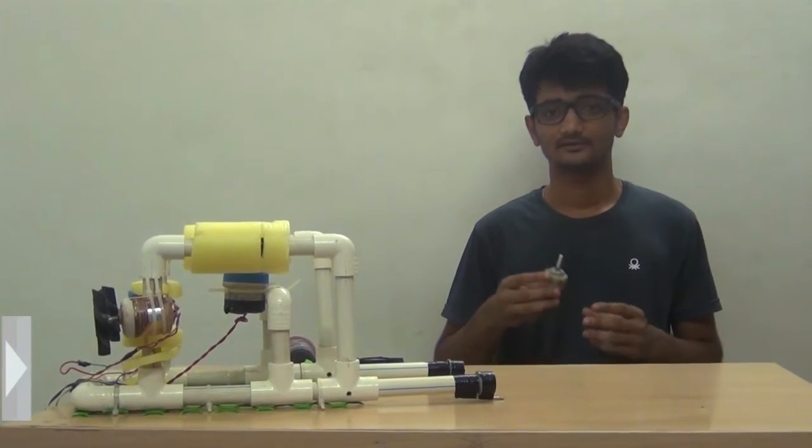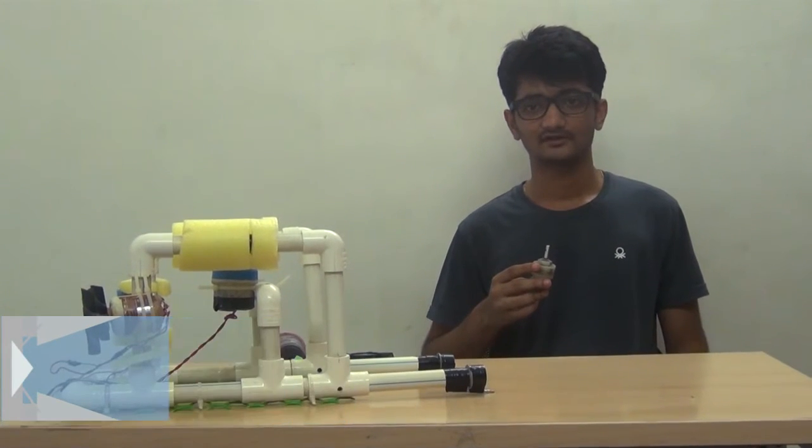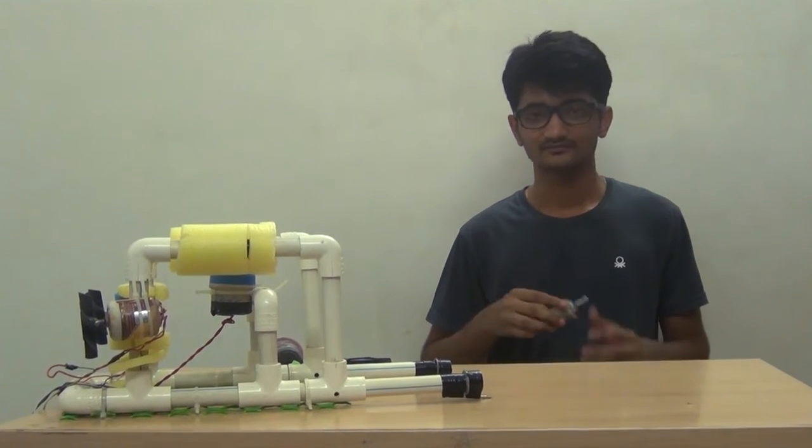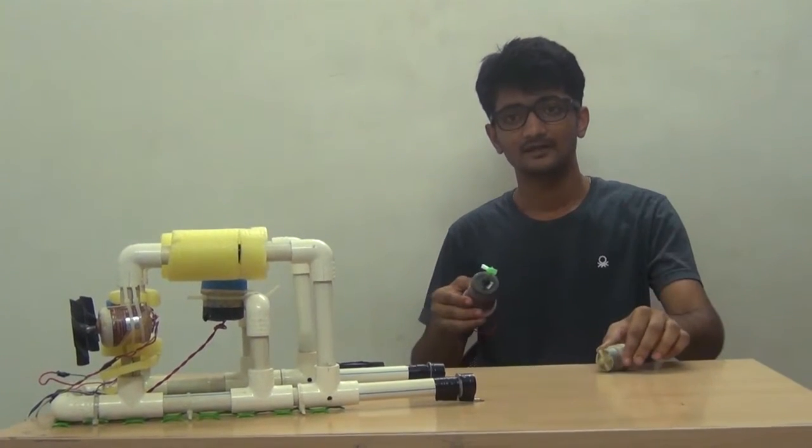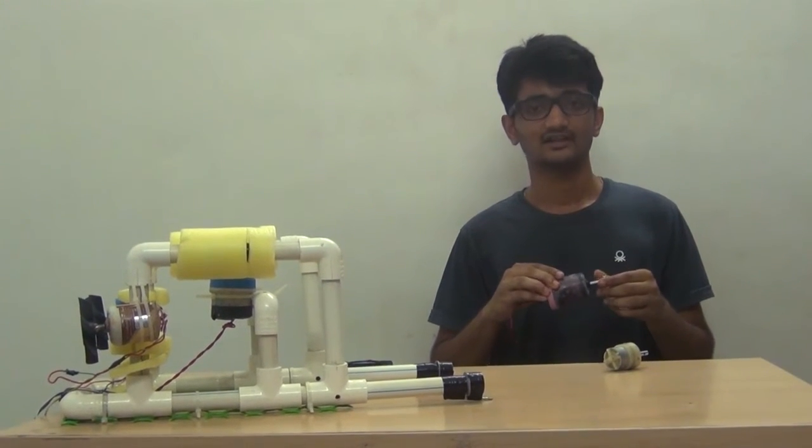For this project we have used 12 volt DC motors of 200 RPM each which give out a torque of approximately 5 kg cm. These motors are waterproofed using sealant and are packed in plastic cans for their utility underwater.